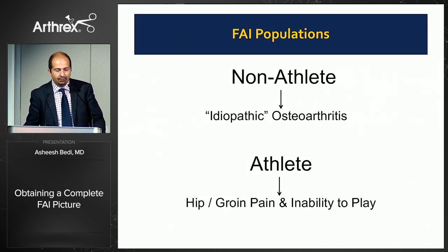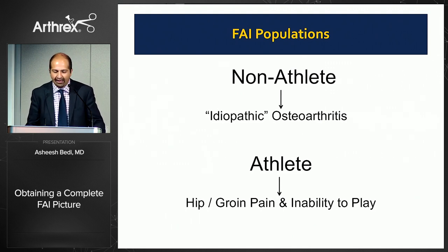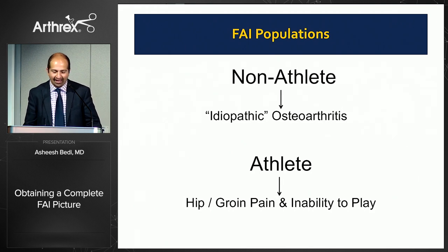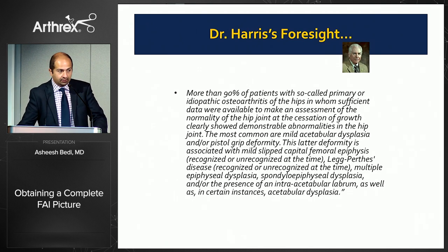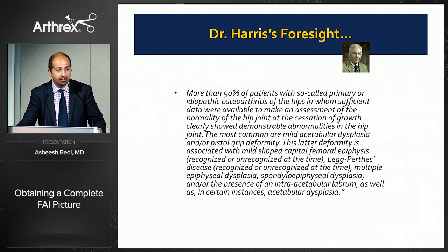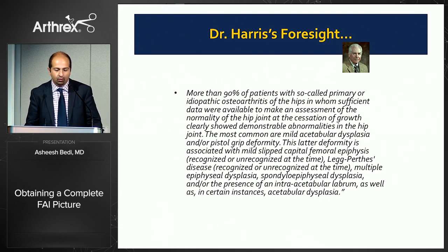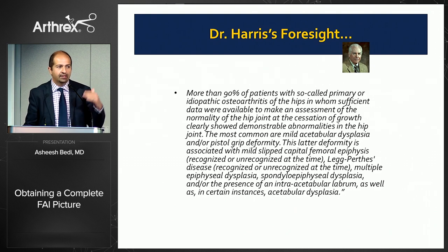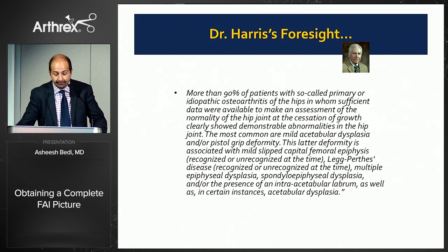Why does all this matter? For the non-athlete it's more of a risk of arthritis later in life. For the athlete it's a concern for immediate return to play. Bill Harris showed that 90% of patients he later saw with so-called idiopathic OA — when he went back and looked at the X-rays — had an underlying explanation for the deformity. It really wasn't idiopathic.